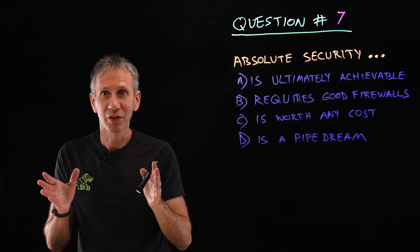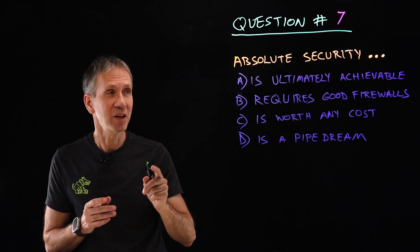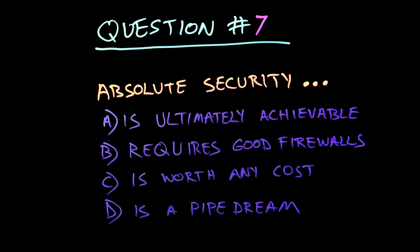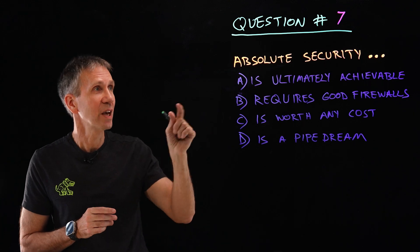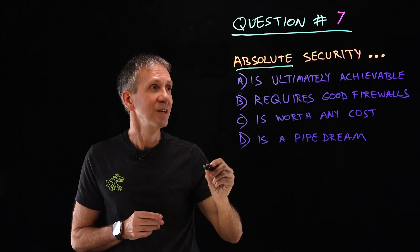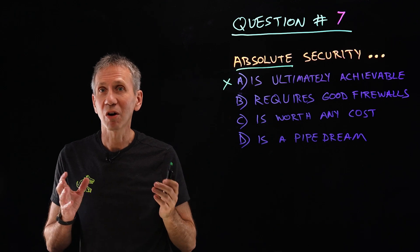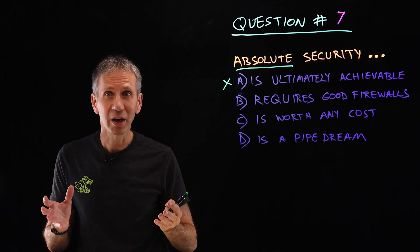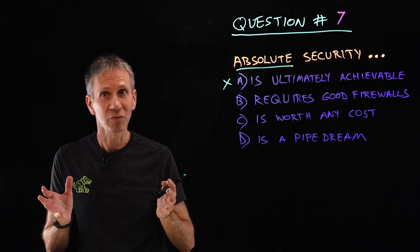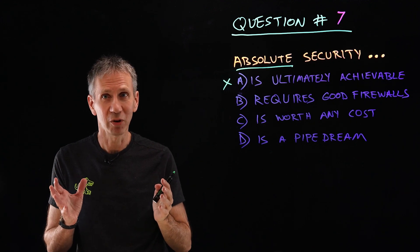Congratulations, you've made it to the final question. Question seven. Absolute security: A, is ultimately achievable. B, requires good firewalls. C, is worth any cost. D, is a pipe dream. Remember, pick the best answer. Okay, so absolute security is ultimately achievable? Not really, because there's always going to be some level of risk. If a computer is operational, it can be hacked. Just remember that, no matter how good a job we do.